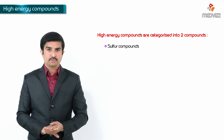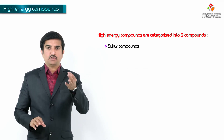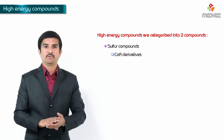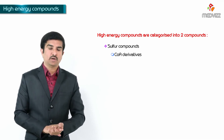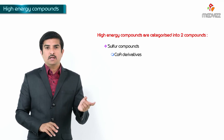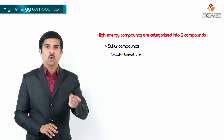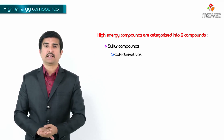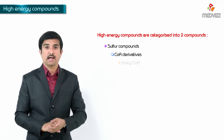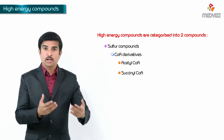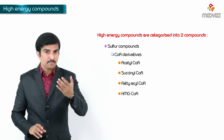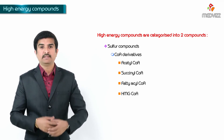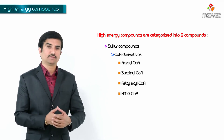The second category is sulfur compounds. An easy way to remember: all coenzyme A derivatives are high energy sulfur compounds. We call them sulfur compounds because coenzyme A is present in the form of CoASH — a sulfhydryl group is present in coenzyme A. Examples include acetyl CoA, succinyl CoA, fatty acyl CoA, and HMG CoA. All compounds containing a coenzyme A are considered sulfur-containing high energy compounds.